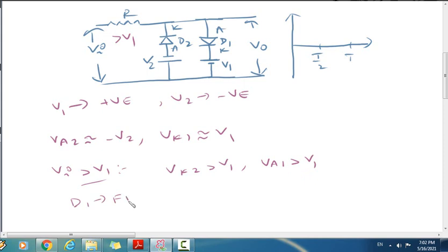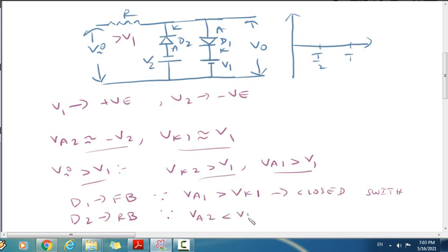VA1 is greater than VK1, so diode D1 will be forward biased and act as a closed switch. VA2 is less than VK2, so diode D2 will be reverse biased and act as an open switch. So D1 is on and D2 is off.